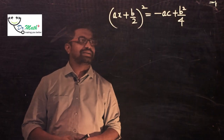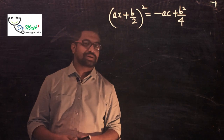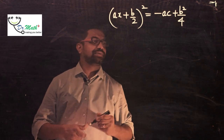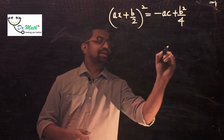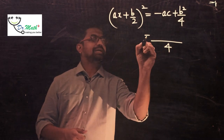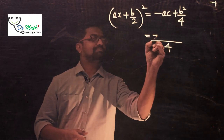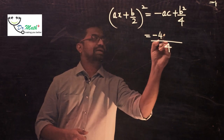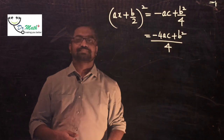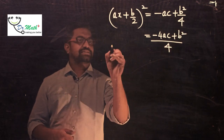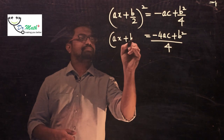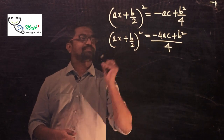We now have (ax + b/2)² = −ac + b²/4. Taking the LCM on the right-hand side, which is 4, the numerator becomes b² − 4ac. So (ax + b/2)² = (b² − 4ac) / 4.